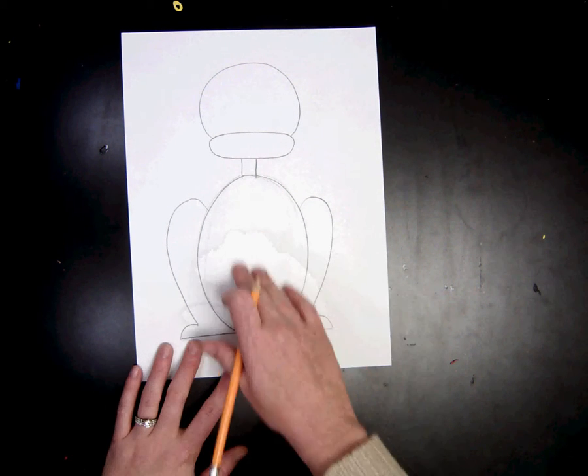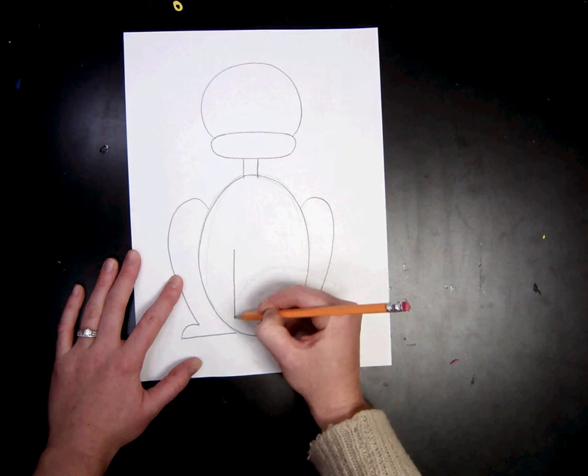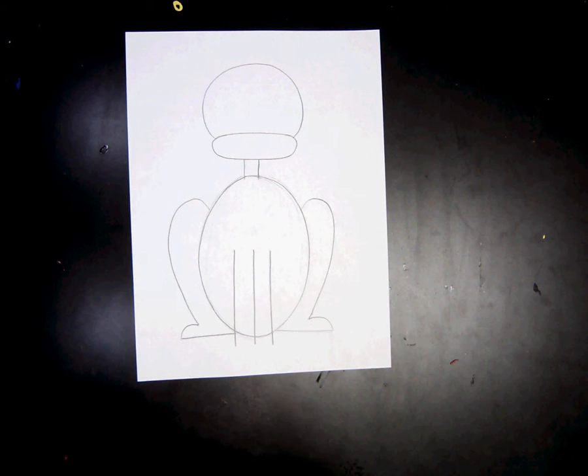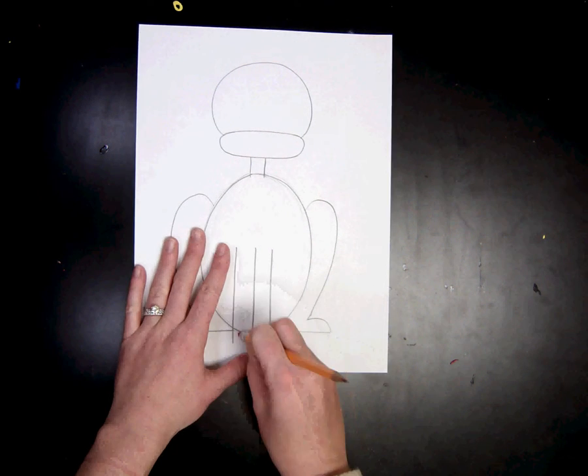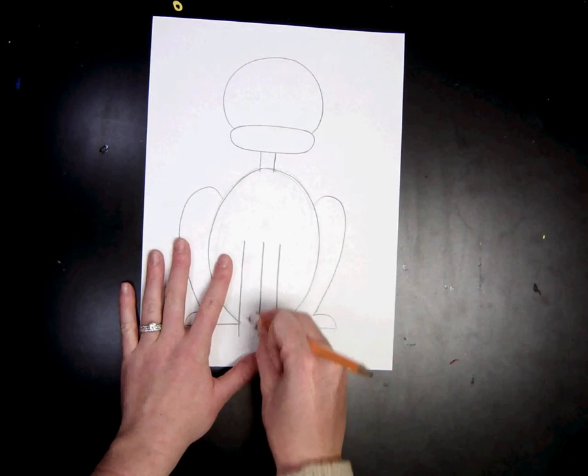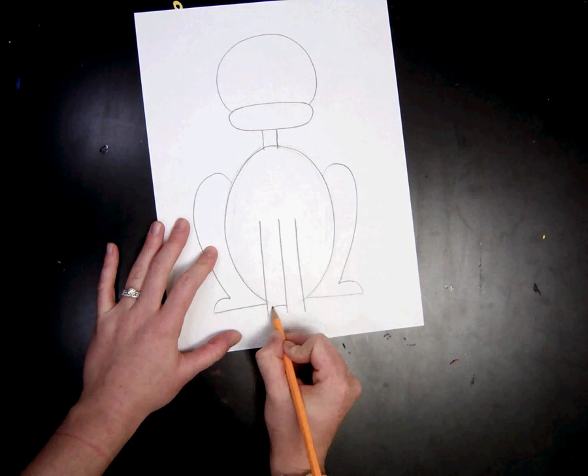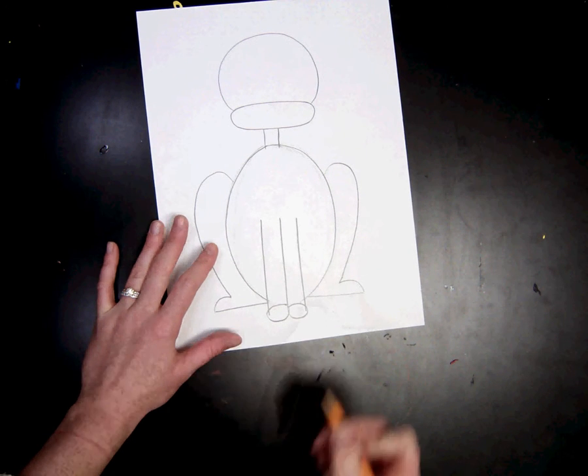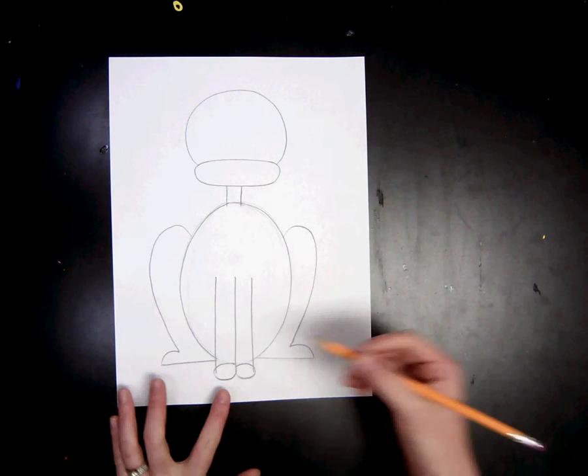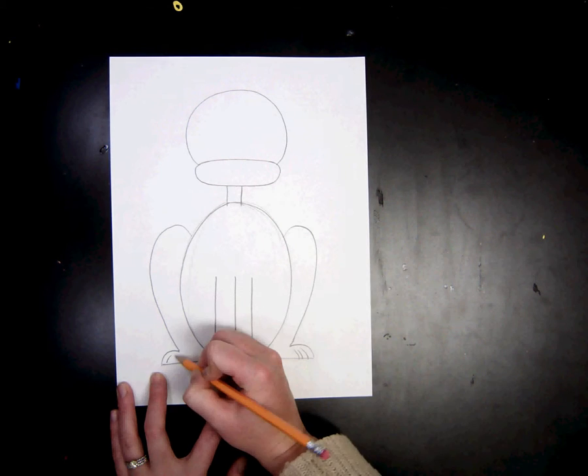Next we're going to do the two legs in the front. We're going to start with three lines. One, two, three. And I'm going to erase the bottom of that oval. And I'm going to add the paws of my dog and kind of make them look more like paws. You can add these lines.